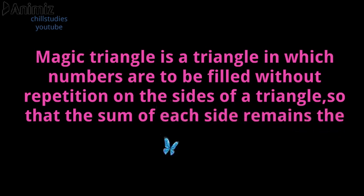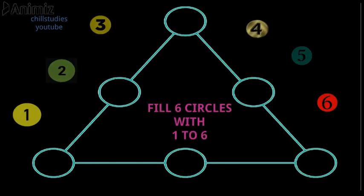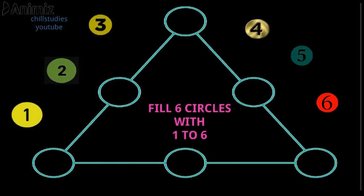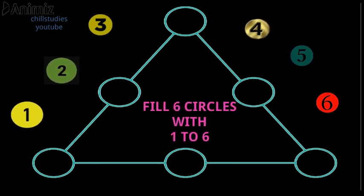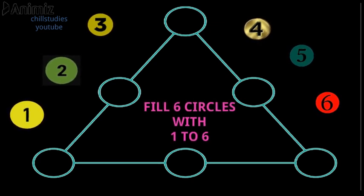Here is the triangle with six circles. Now we are going to fill up the circles with the numbers from one to six without repetition so that each side of the magic triangle adds up to 12.